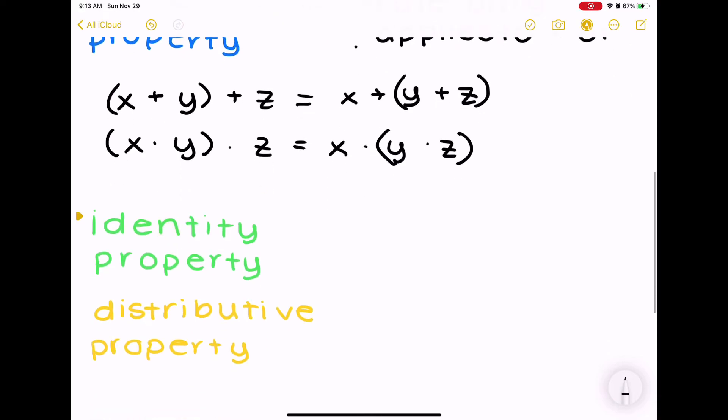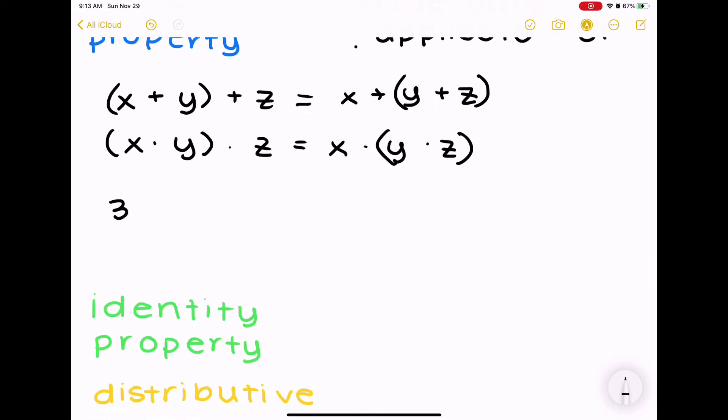So, let's say we had something like 3 plus 5 in parentheses plus 2. Well, that is equal to 10, because 3 plus 5 is 8, plus 2, that's 10. And if we have 3 plus 5 plus 2, well that is still equal to 10, even though the parentheses have changed.